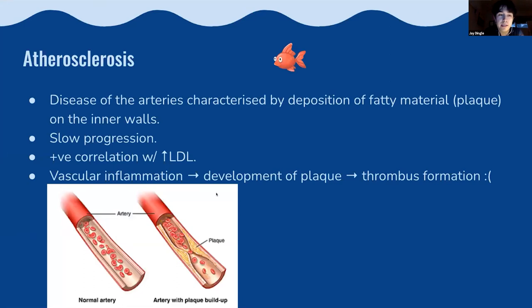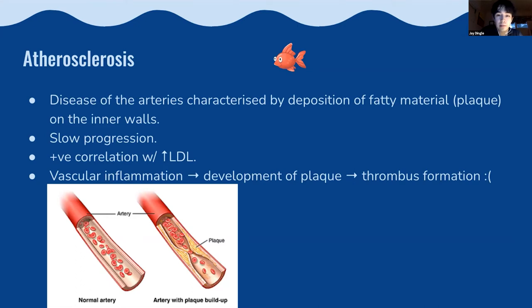Atherosclerosis is a disease of the arteries characterized by a build-up of fatty material — plaque — on the inner walls of your arteries. It manifests over many, many years. There's often a positive correlation with people who have a high concentration of low-density lipoproteins, and vascular inflammation leads to plaque development and ultimately thrombus formation, which causes dangerous complications.